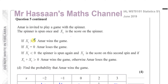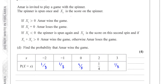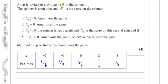Part D says: Amar is invited to play a game with the spinner. The spinner is spun once and X1 is the score. If X1 is greater than 0, Amar wins the game. If X1 equals 0, Amar loses the game. If X1 is less than 0, the spinner is spun again and X2 is the score on the second spin. If X1 plus X2 is greater than 0, Amar wins; otherwise, Amar loses.